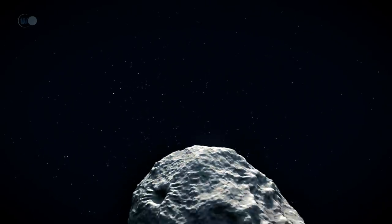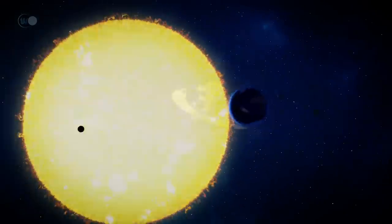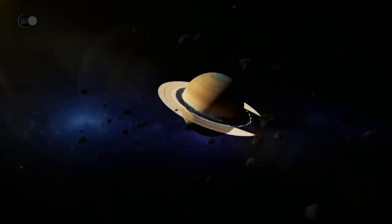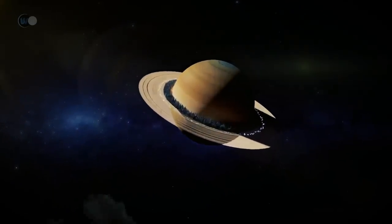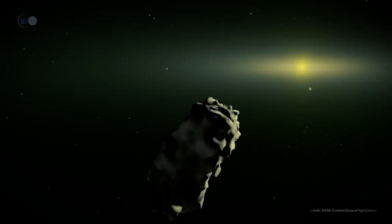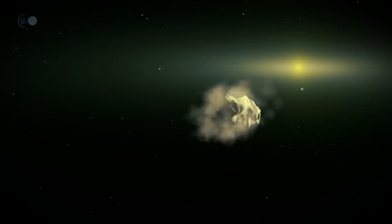However, where this comet came from remains a mystery that will probably never be solved, as Borisov, currently near Saturn, is speeding away from our solar system on a one-way trip.